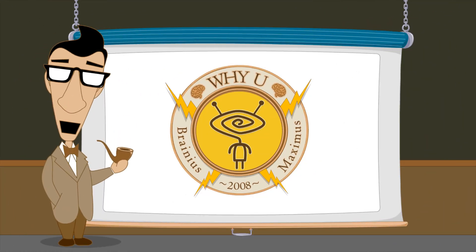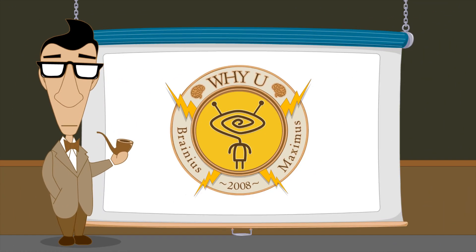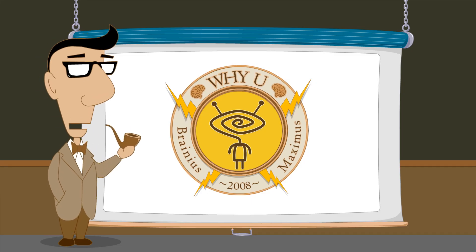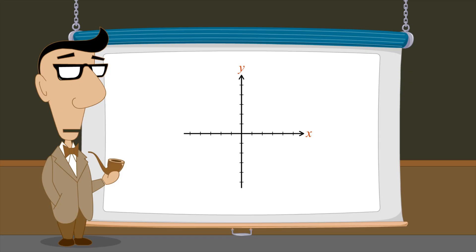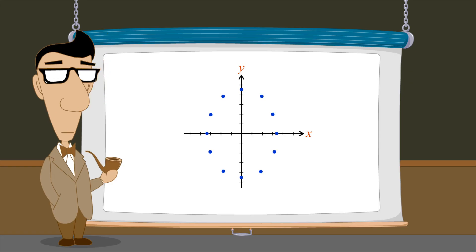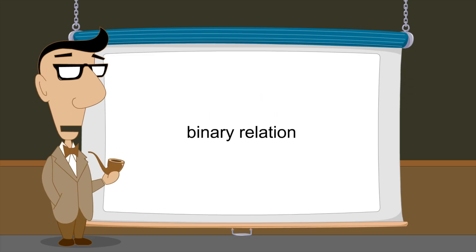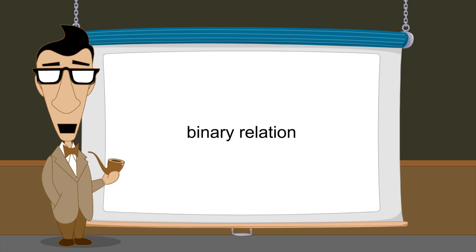Hello, I'm Professor Von Schmohawk and welcome to Why U. We have seen how ordered pairs can be graphically represented as points in a plane using Cartesian coordinates. As we will see later in this lecture, this set of ordered pairs is an example of a binary relation. A binary relation relates various elements of one set to elements of another set.